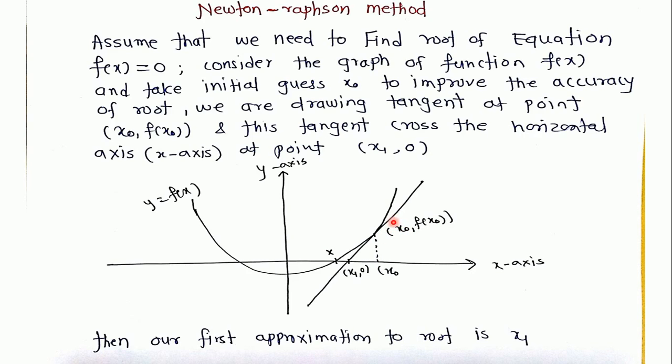We are drawing the tangent at this point to improve our accuracy of the root. If we draw the tangent at this point then this tangent will cut the x-axis at this point. This point is (x1, 0). Again we are drawing the tangent at this point (x1, f(x1)) and then we get the next approximation to the root at this point, which will be x2.